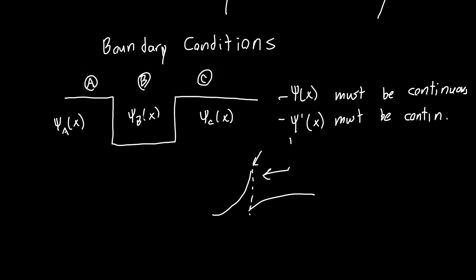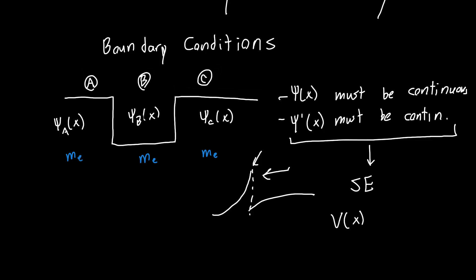These boundary conditions can actually be derived straight from Schrödinger's equation, under certain assumptions about what the potential V looks like. However, this does make one assumption: that the electron mass is continuous, meaning the electron mass can't be different in region A than in B or C. In general that's not always true, and we'll relax that assumption in future videos. Given these conditions, we expect a smooth wave function without any kinks or discontinuities.